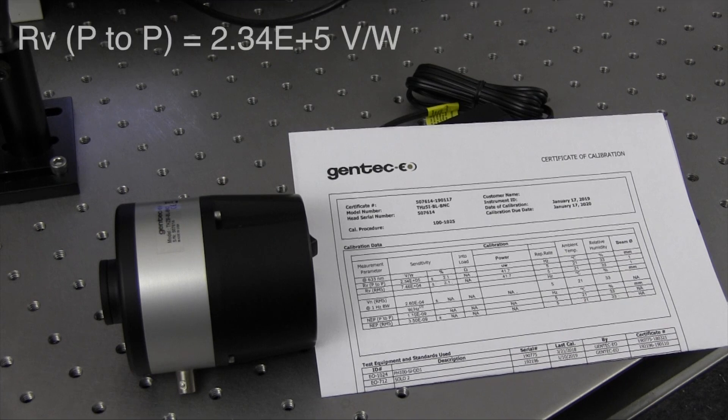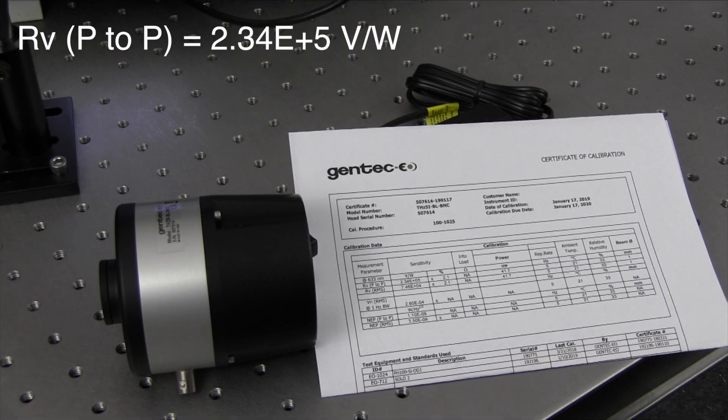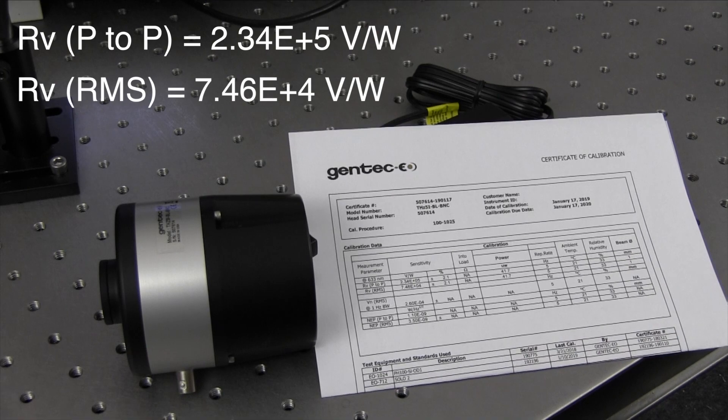The first is a peak-to-peak value for use with an oscilloscope. The second is an RMS value for use with your lock-in amplifier.